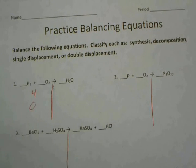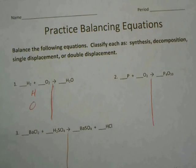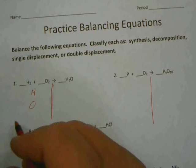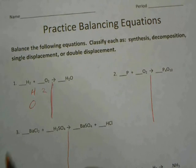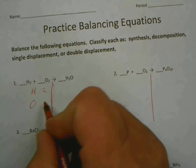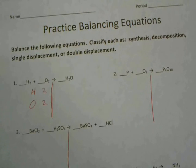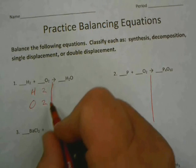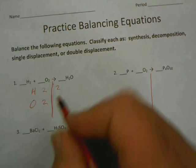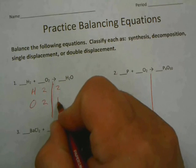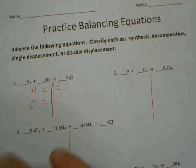So how many H's do we have to the left of the arrow? Two. How many O's do we have? Two. How many H's do we have to the right? Two O's. One. The part that's messed up is what? The O's.